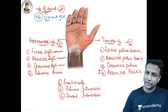If the ulnar nerve is injured, all 15 muscles are lost, and the hand becomes a partial claw hand. That's the key exam point: partial claw hand → ulnar nerve involved. If we want a complete claw hand, both ulnar nerve and median nerve must be injured — losing all 20 muscles. Complete claw hand → ulnar nerve plus median nerve.